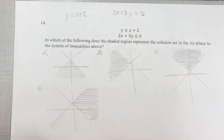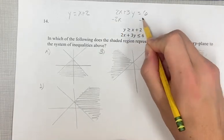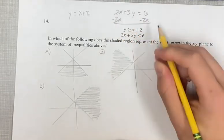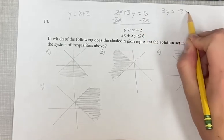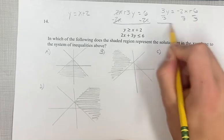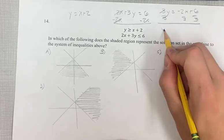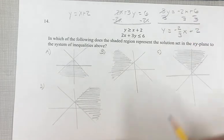This one is already in slope-intercept form and we want to get this one in it too. We want to get y alone. If we subtract 2x from both sides, these cancel. We get 3y equals negative 2x plus 6. Divide everything by 3. These cancel. We get y equals negative 2 over 3x plus 2.